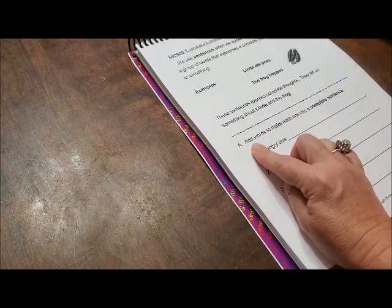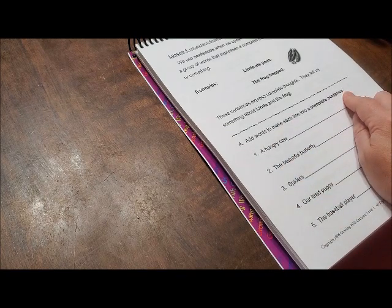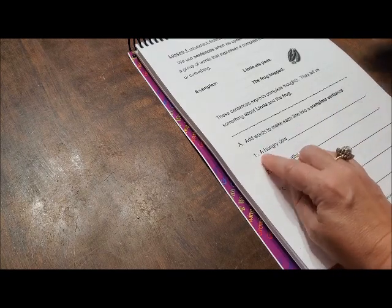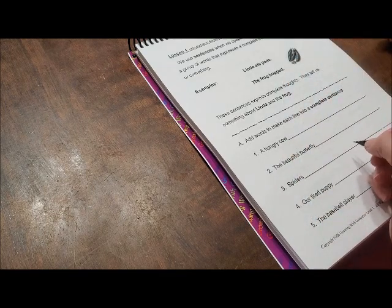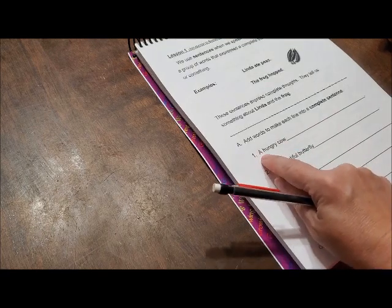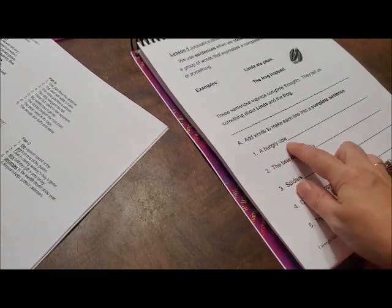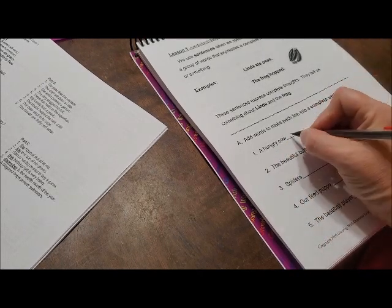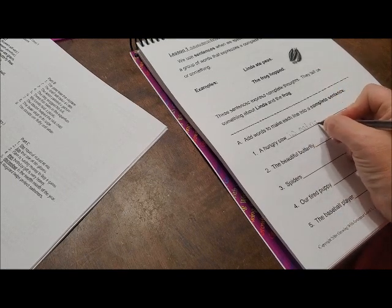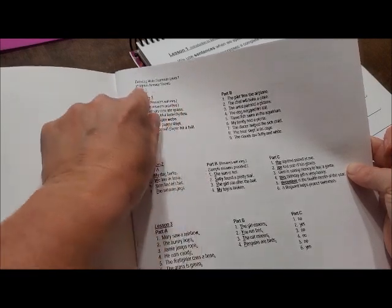Alright. So, now it tells us down here to add words to make each line into a complete sentence. So, it says, a hungry cow. A hungry cow. Just tell me something. A hungry cow. Alright. So, we're going to finish this sentence. A hungry cow is eating. Correct. So, I'm just going to write is eating. And, once you get better at writing, you will write these. And, we have a period. So, it goes at the end of the sentence. And, it's going to tell us that the answers will vary. But, here's lesson one, Part A.